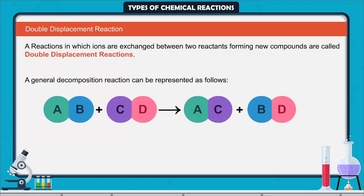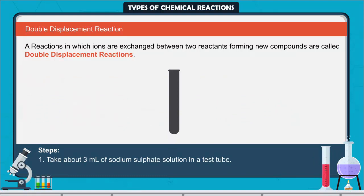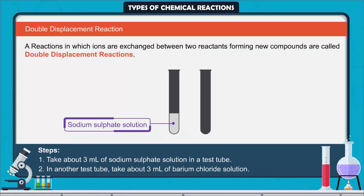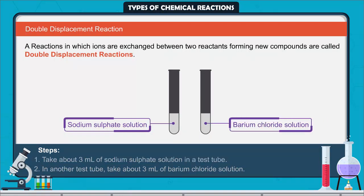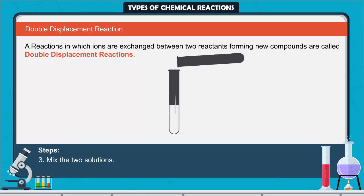Let's try an activity. Take about 3 ml of sodium sulfate solution in a test tube. In another test tube, take about 3 ml of barium chloride solution. Mix the two solutions. What do you observe? You will observe that a white substance, which is insoluble in water, is formed.